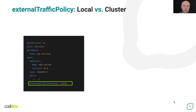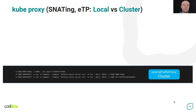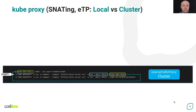Source NAT will not be executed in such a case and the client's source IP address will be preserved. Of course, you can only use this field for the node port and load balancer services. It doesn't make sense for cluster IP services. The default value for this field is cluster and you don't need to configure it explicitly. Now let's look at the differences between these two scenarios at the kube-proxy configuration level. Let's start with the default settings where external traffic policy is equal to cluster. In the kube-nodeports chain, there are matching rules based on destination port value configured for node port services.